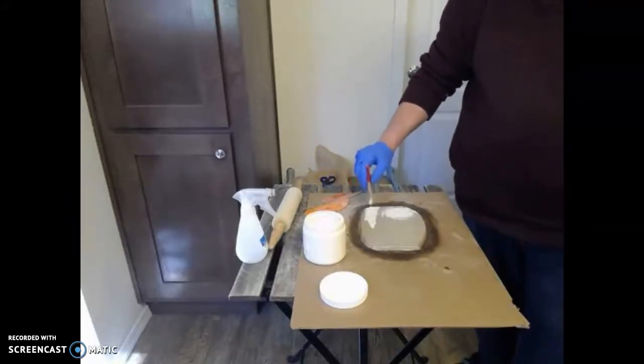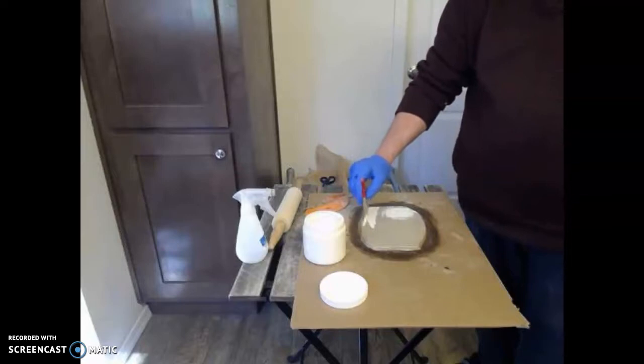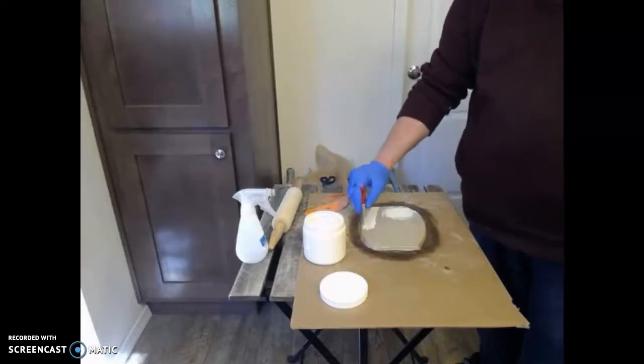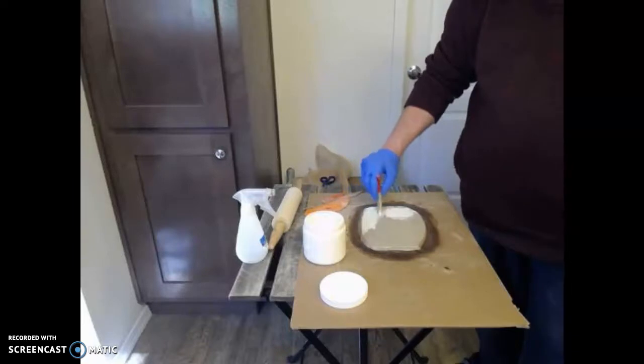This is the print coat. It's important to have it really covering the surface and getting into all the details because after this, every other layer is just going to be sitting on top of this. So if you have any bubbles or details that you can't get into, they won't be showing on your mold because you didn't get into the details enough.